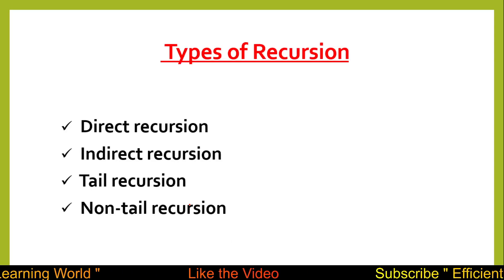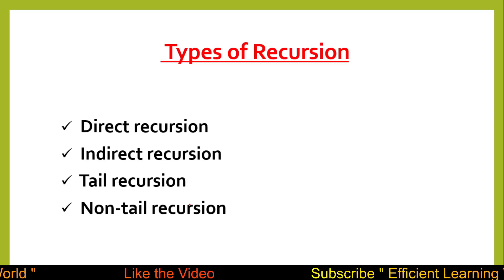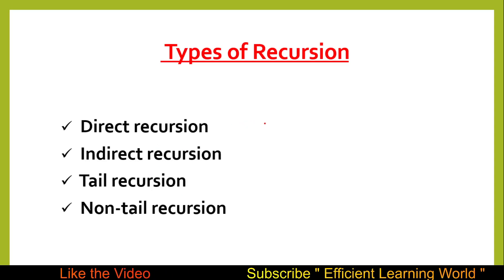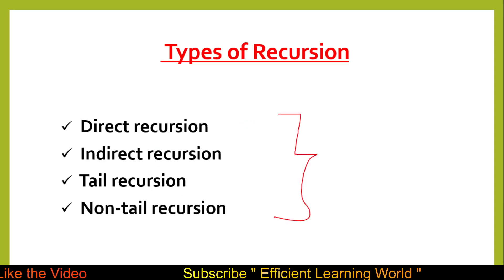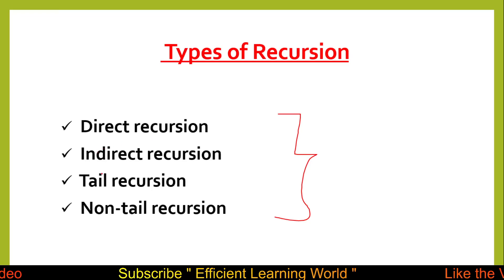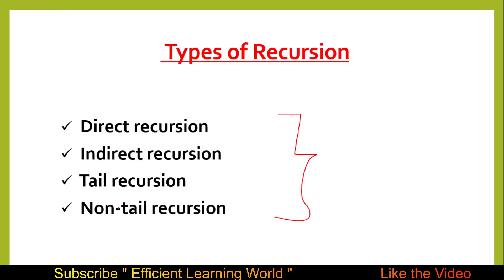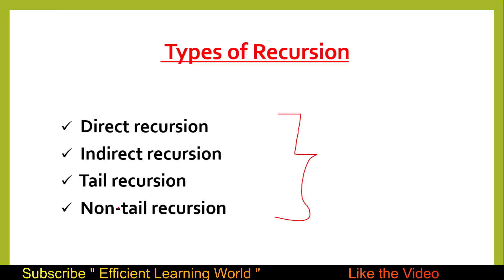There are a lot of types of recursion, but the basic and important ones are four types: direct recursion, indirect recursion, tail recursion, and non-tail recursion. Let's start one by one.